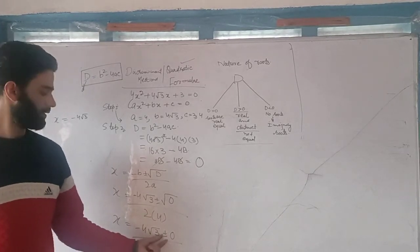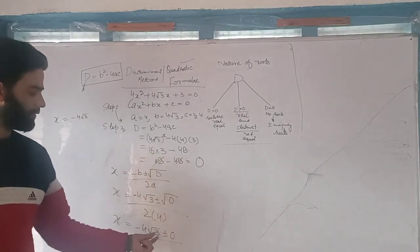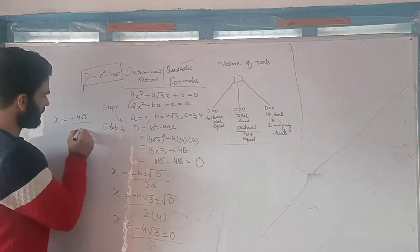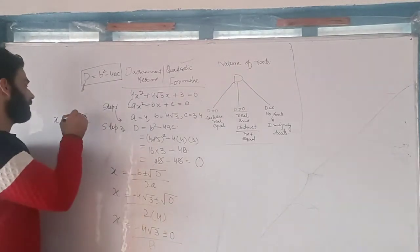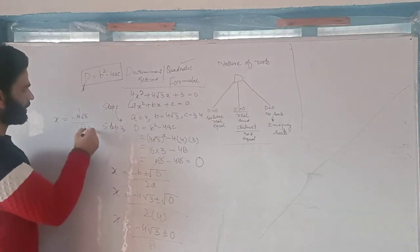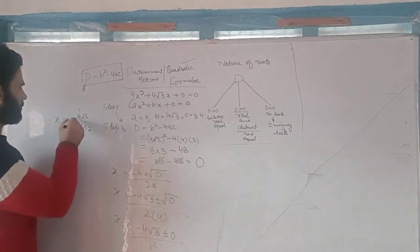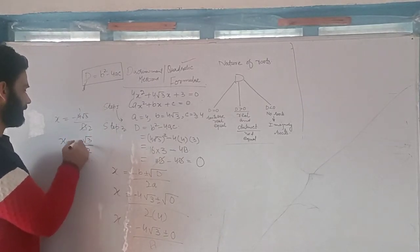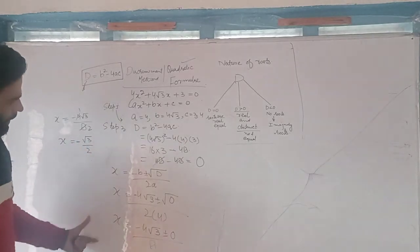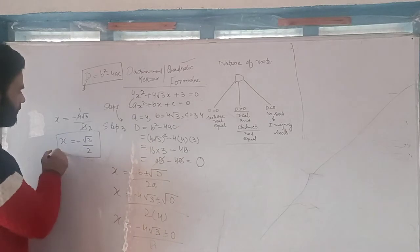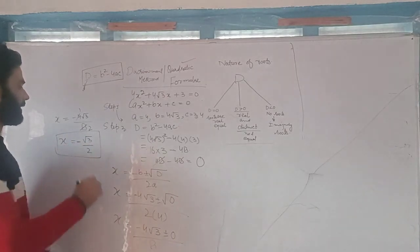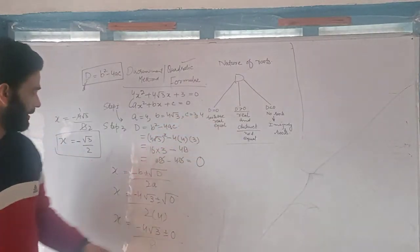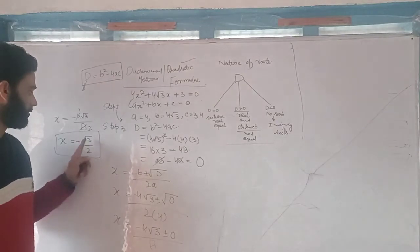Plus 0 or minus 0 will not affect the given number. Divide by 8. Here we divide: 4 ones are 4, 4 twos are 8. That means x is equal to minus under root 3 divided by 2, and the sign is minus. That means it has 2 equal roots — x is equal to minus under root 3 divided by 2. Because the discriminant is 0, its roots are equal. That means both roots are minus under root 3 divided by 2.